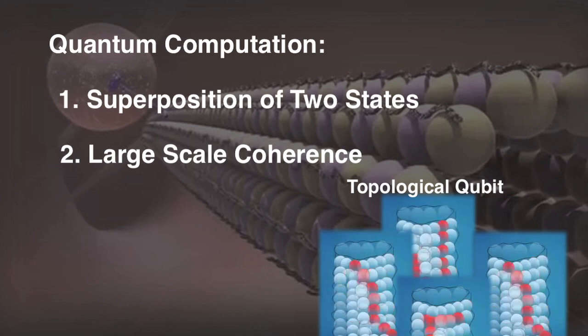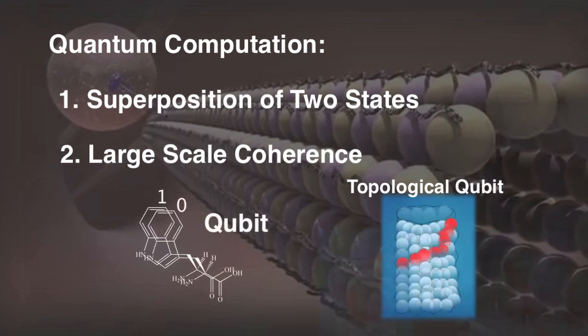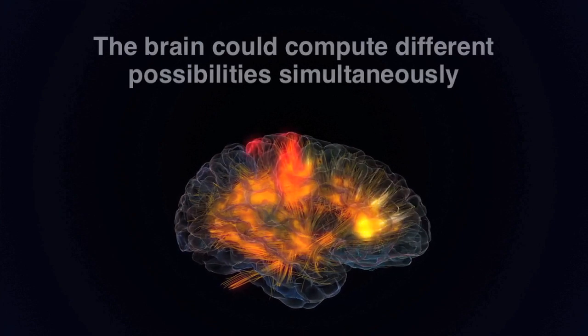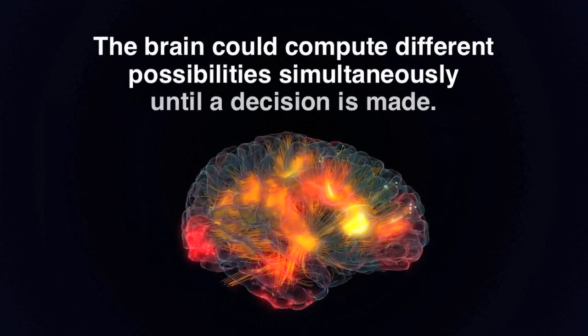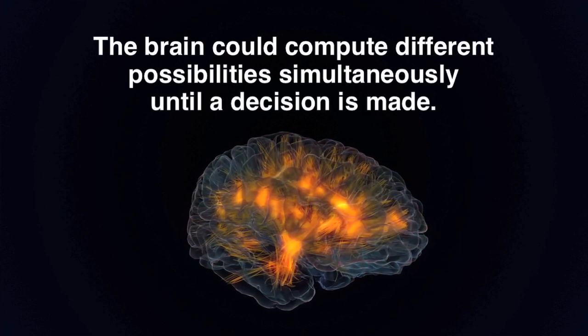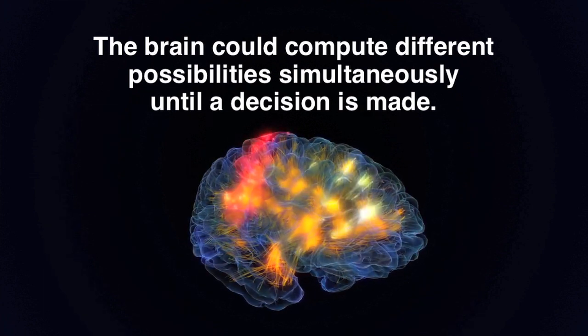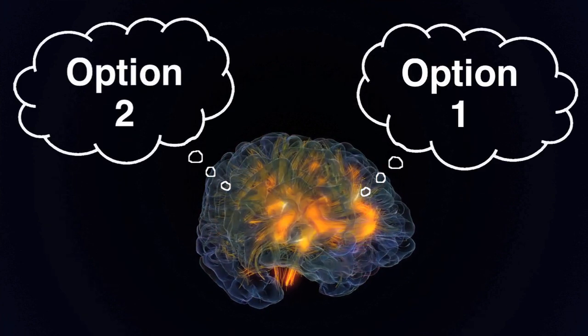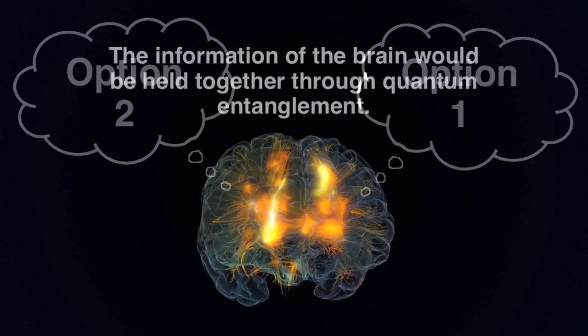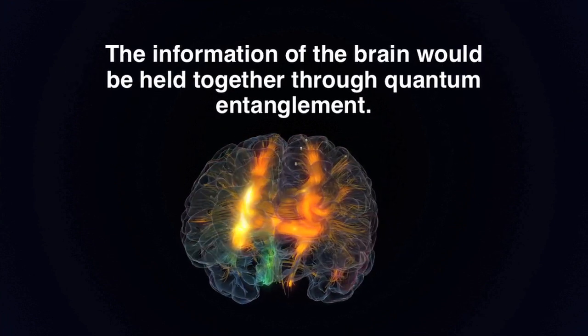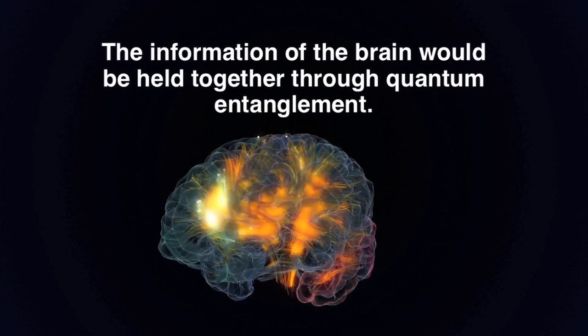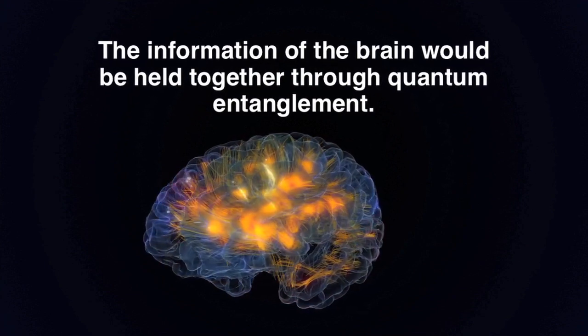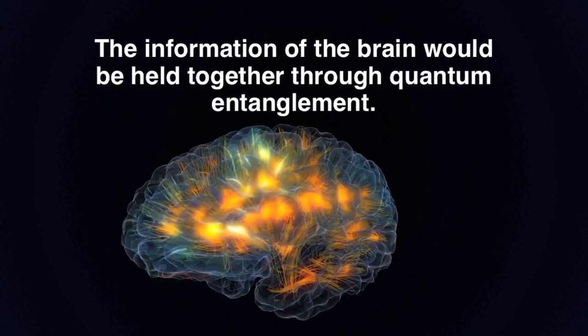Microtubules inside neurons fulfill the two requirements necessary for quantum computation. This would mean the brain could compute different possibilities simultaneously until a decision is made and the collapse to one state is produced, which corresponds to the intuitive way of how we think, weighing different options before making a final decision. This would also mean the information of the brain would be held together through quantum entanglement and could process and transfer information across the brain instantly.